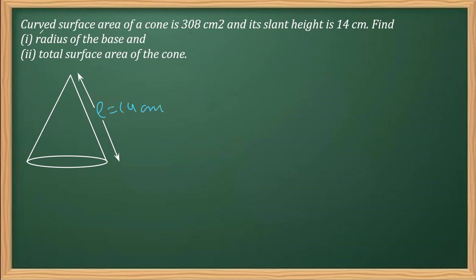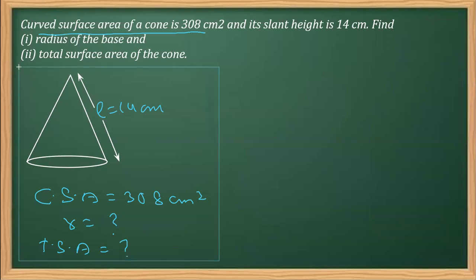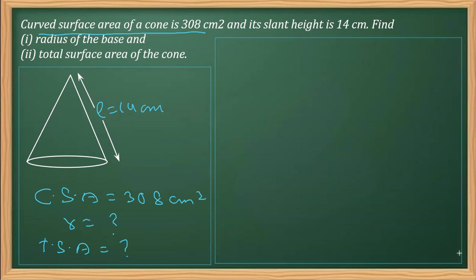The curved surface area of the cone, CSA, is given as 308 cm². We are going to find its radius in the first part and the total surface area in the second part. First, we've written all information symbolically, and then we'll do the working.